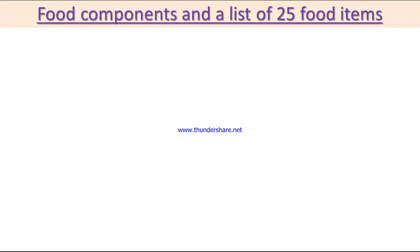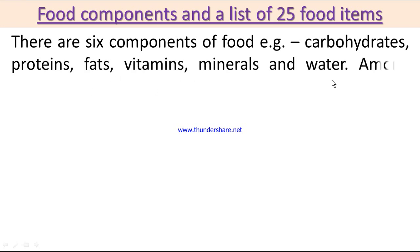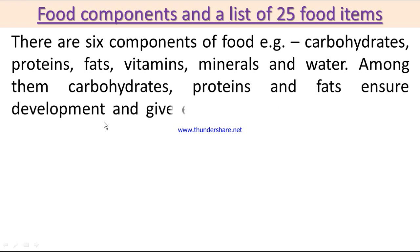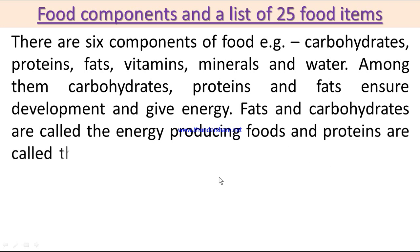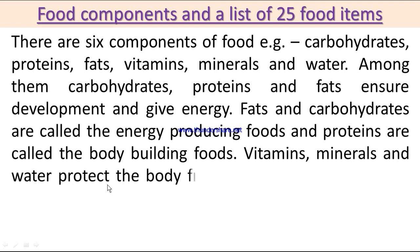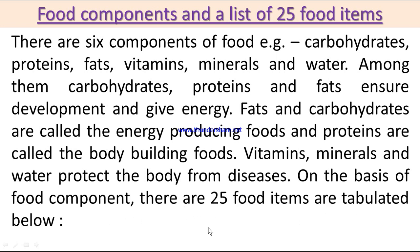Food components and a list of 25 food items. There are six components of food: carbohydrates, proteins, fats, vitamins, minerals, and water. Among them, carbohydrates, proteins, and fats ensure development and give energy. Fats and carbohydrates are called the energy-producing force, and proteins are called the body-building force. Vitamins, minerals, and water protect the body from diseases. On the basis of food components, 25 food items are tabulated below.